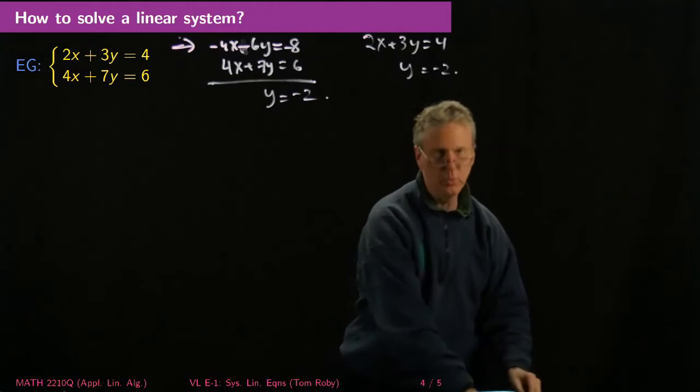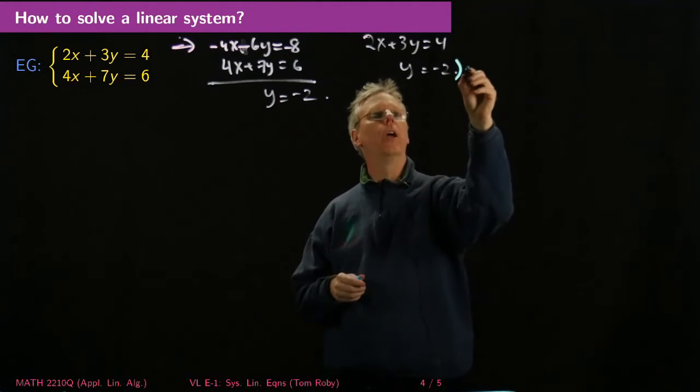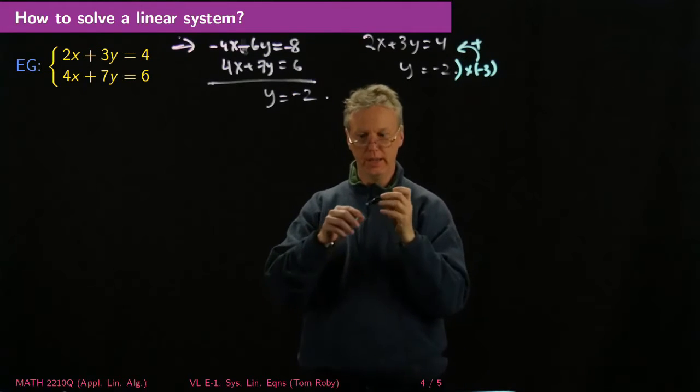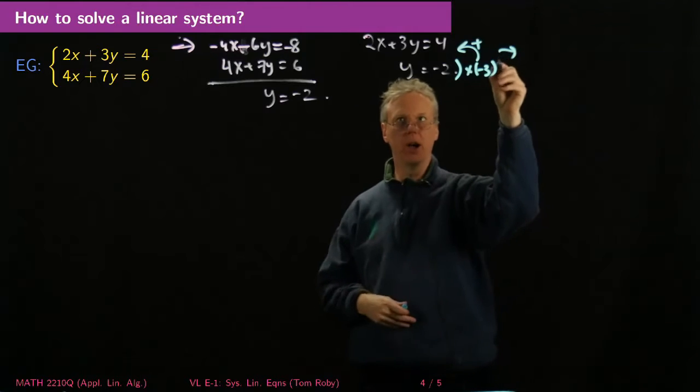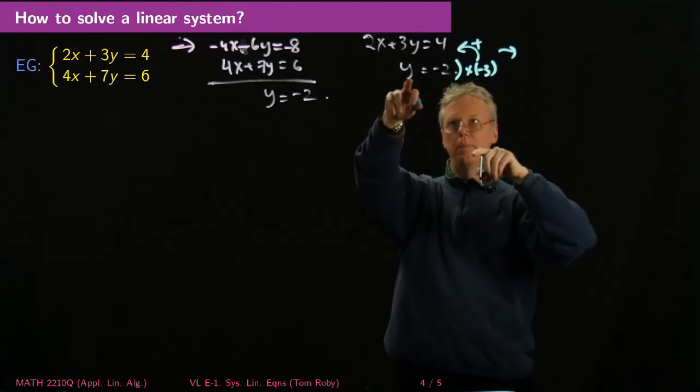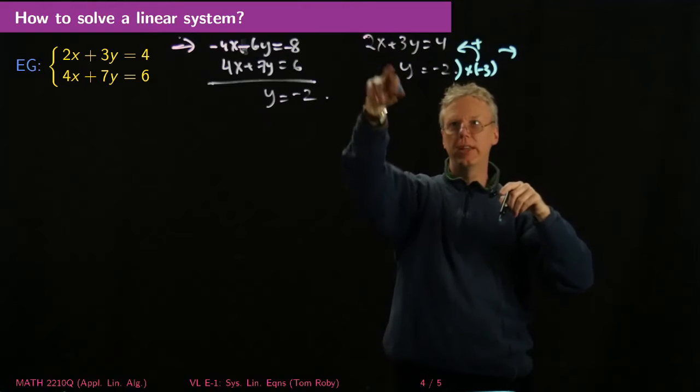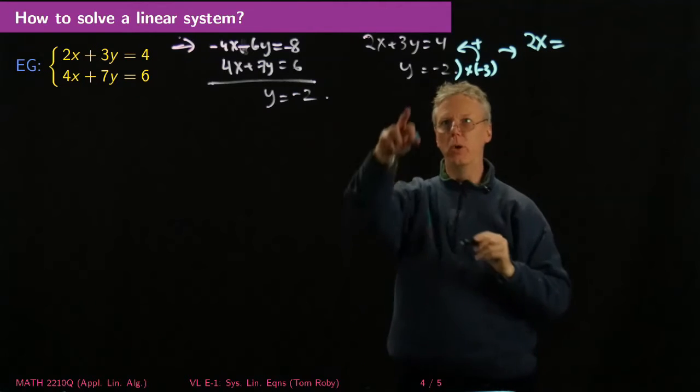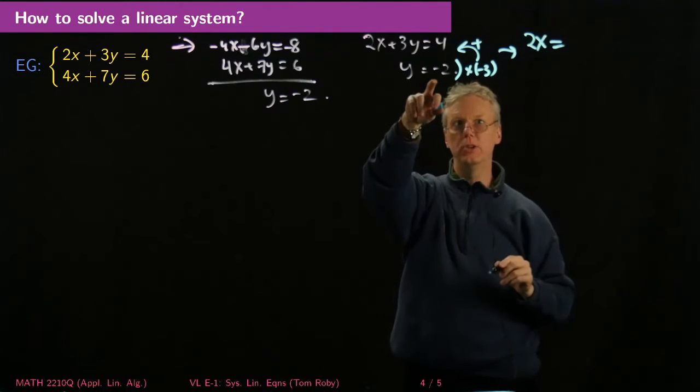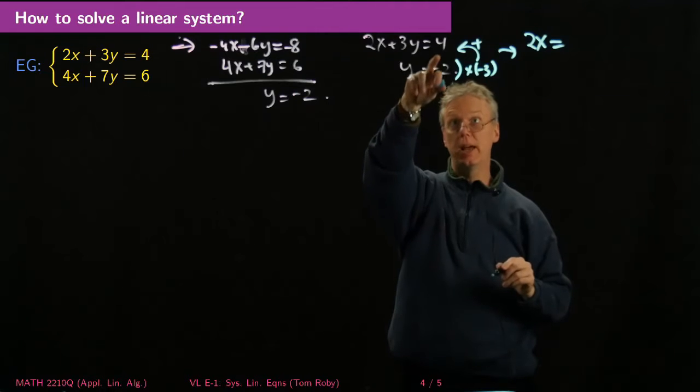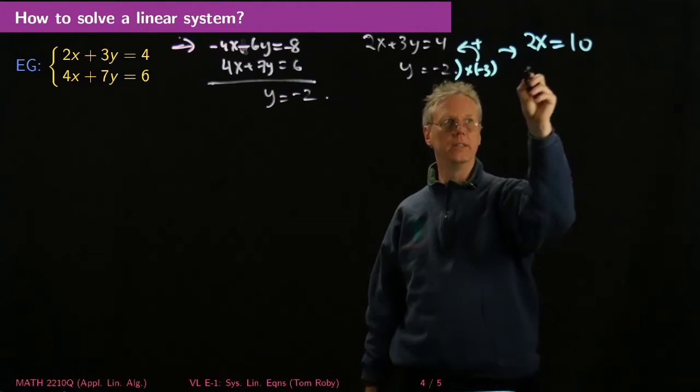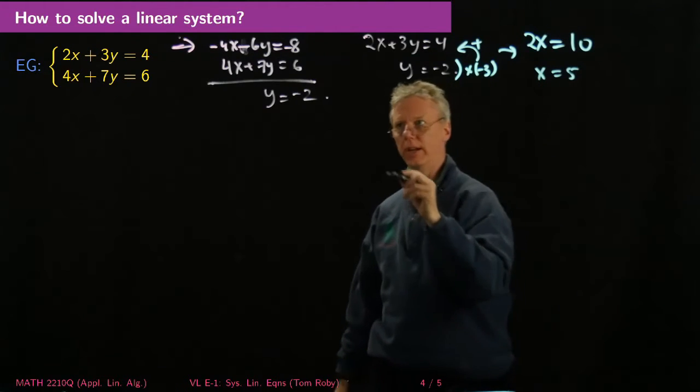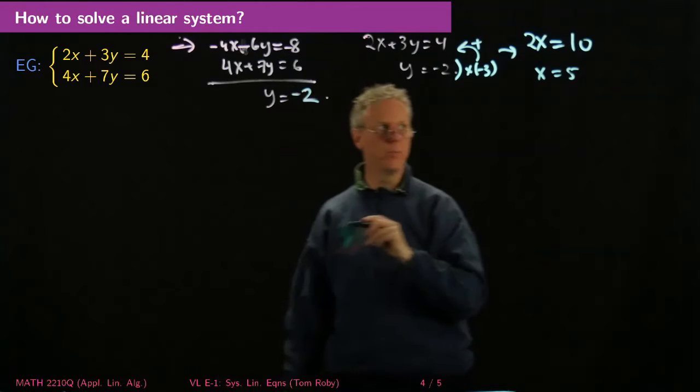So I'm going to take this one, take this equation, multiply it times -3, and add it up here, okay? And what happens when I do that is that then this equation becomes, then I've zeroed that out, there's nothing going on at the y level, and so I end up with 2x is equal to what? Well, so I've got the -3 times -2 is 6 that I'm adding to the 4, so I get 10, and so then that simplifies to x = 5, okay?